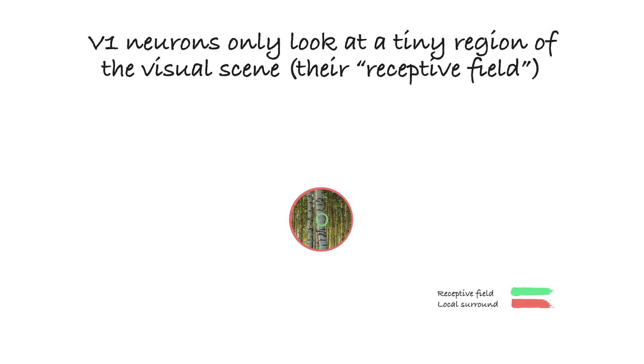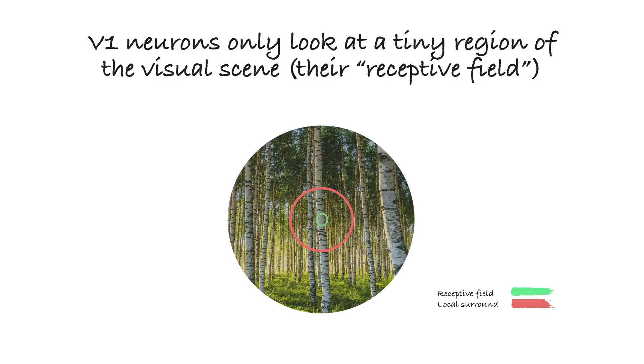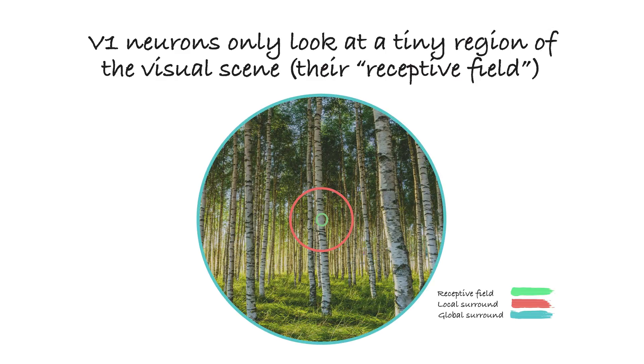For example, adding information from the near-surround region just outside the receptive field allows this V1 neuron to see that what it was seeing through its small receptive field was part of a tree. Adding additional information beyond the near or local surround — that is, from the far surround — additionally allows this V1 neuron to see that this tree is embedded in a forest. So in this study, we asked how do V1 neurons integrate local and global visual information from outside the receptive field.